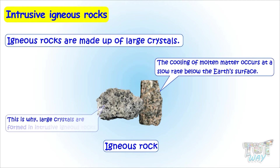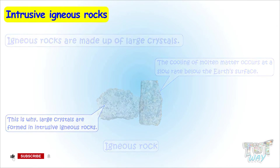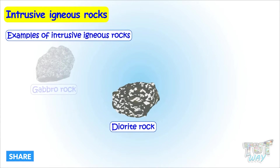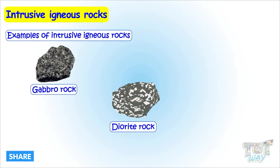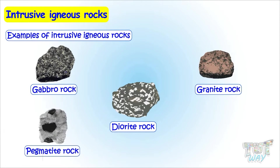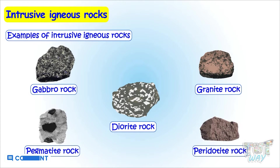This is why large crystals are formed in intrusive igneous rocks. Examples of intrusive igneous rocks are diorite, gabbro, granite, pegmatite, and peridotite.